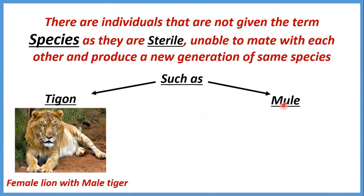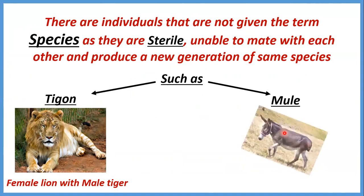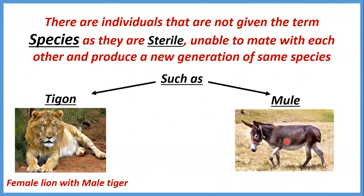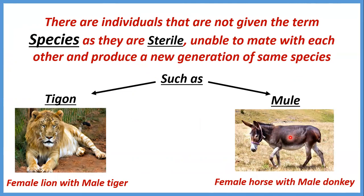حاجة تانية: الmule — اللي هو البغل. الmule ده بيبقى result from mating between a female horse with a male donkey. برضو نفس الحكاية، ده بيبقى sterile، unable to mate، وما بيديش new generation of the same species.